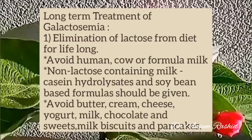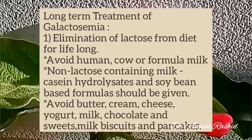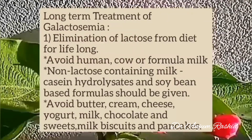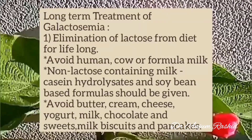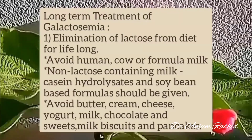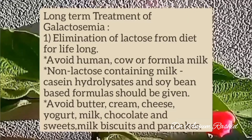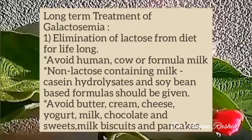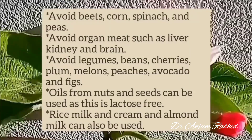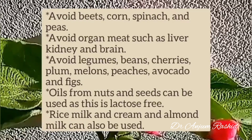Long-term treatment involves elimination of lactose from the diet for life. Avoid human, cow, or formula milk. Use non-lactose-containing milk — casein hydrolysate and soybean-based formula can be given. Avoid butter, cream, cheese, yogurt, milk, chocolate, sweets, milk biscuits, and pancakes. Also avoid beets, corn, spinach, peas, and organ meats such as liver, kidney, and brain.